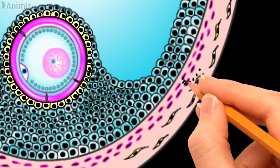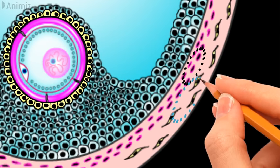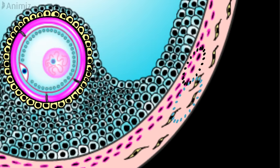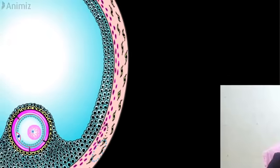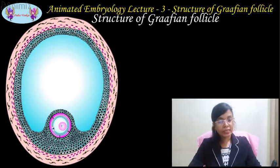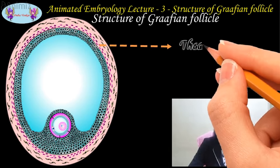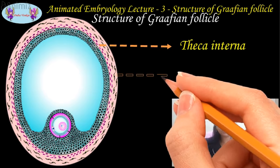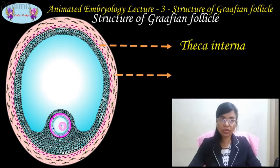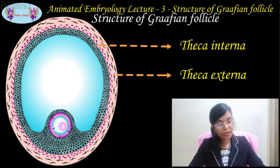Around the Graafian follicle in the picture, you can appreciate two layers of ovarian connective tissue that externally cover the whole follicle. The inner layer is secretory in nature and is called the theca interna. The outer layer is fibrous in nature, forming a capsule-like structure that covers the whole follicle outside, and is called the theca externa.